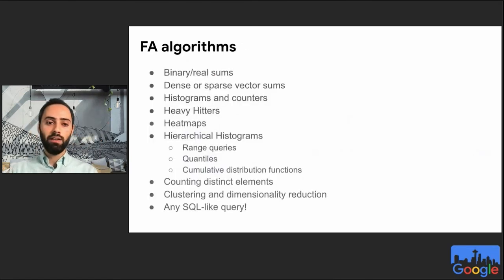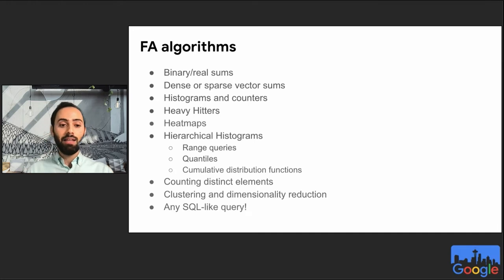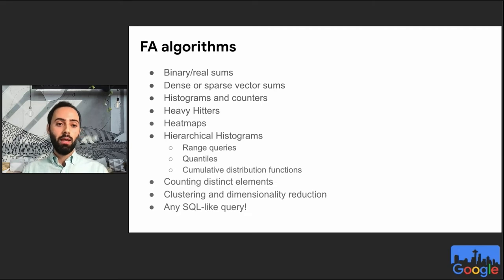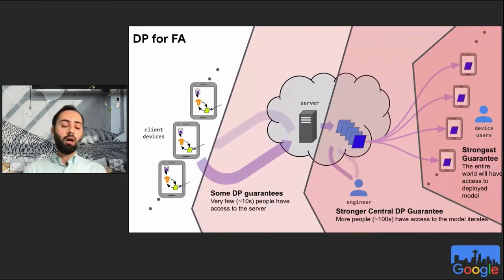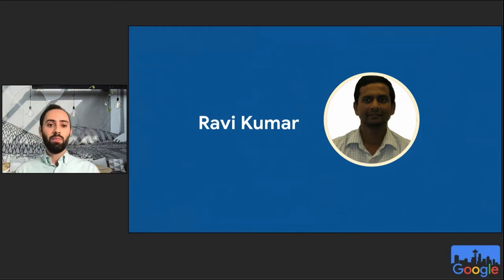Federated analytics algorithms span binary and real sums, vector aggregations, histograms, counters, heavy hitters, heat maps, hierarchical histograms for range queries, quantiles, CDFs, counting distinct elements, clustering, and dimensionality reduction. Think of it as answering SQL-like queries over massively decentralized data. In this talk we focus on binary and real sums under different flavors of differential privacy — local, distributed, and central. I'm excited to introduce Ravi Kumar to discuss this work.